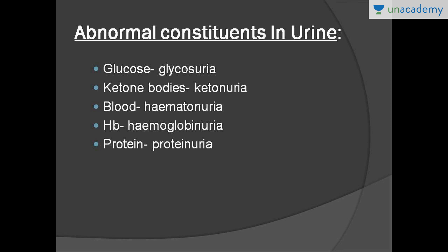If there is presence of glucose in urine, it's called glycosuria. If we have ketone bodies inside urine, it's called ketonuria. Both glucose and ketone bodies are present in urine in one of the most common lifestyle problems worldwide — diabetes mellitus. Ketone bodies are also present in cases of pregnancy or starvation.